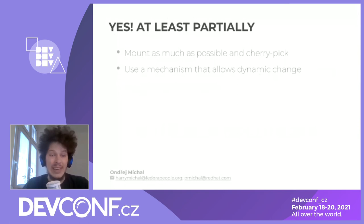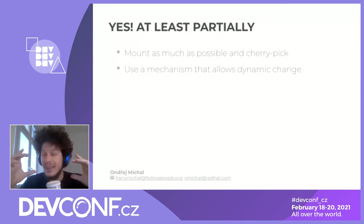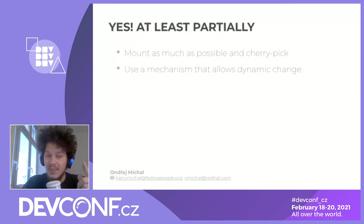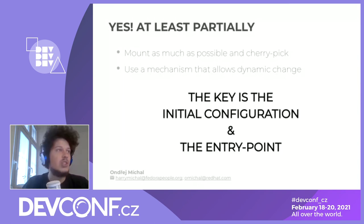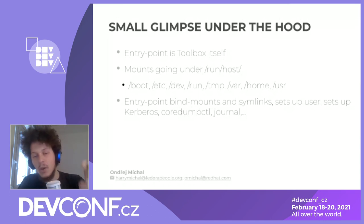Is there a solution? Yes, at least partially. First, we can mount as much as possible and then cherry pick, using a mechanism that allows dynamic change. Apart from mounts, you can also set an entry point — a command executed every time a container starts — and that cannot be changed either. But we can add a mechanism inside that is dynamic on the inside, even though we don't change it on the outside. The key is the initial configuration and the entry point, and this is something that Toolbox does. As the entry point, it uses itself — a Toolbox binary shared inside the container.